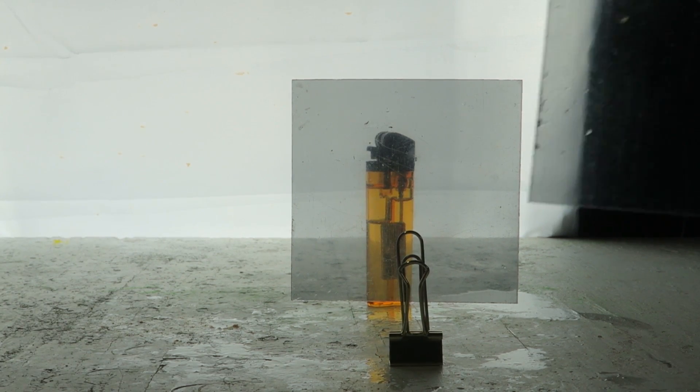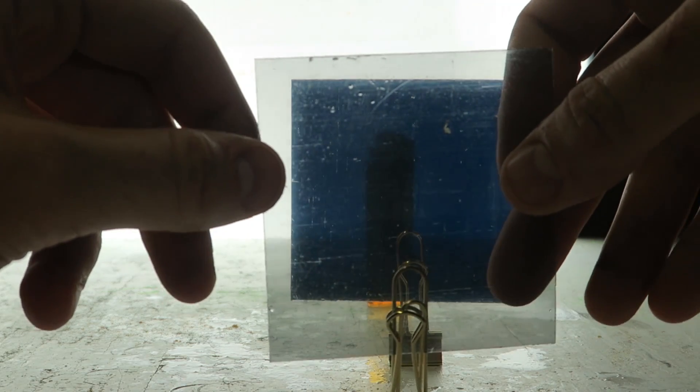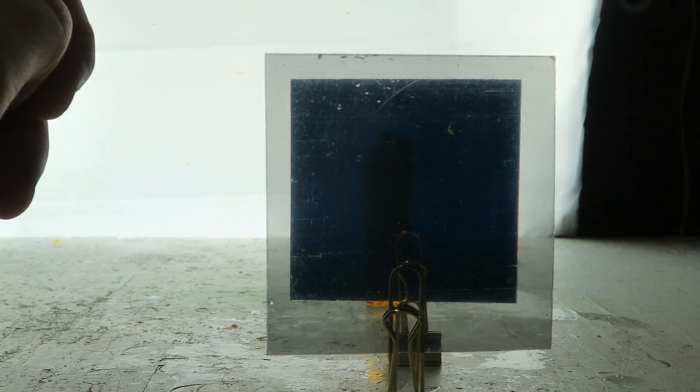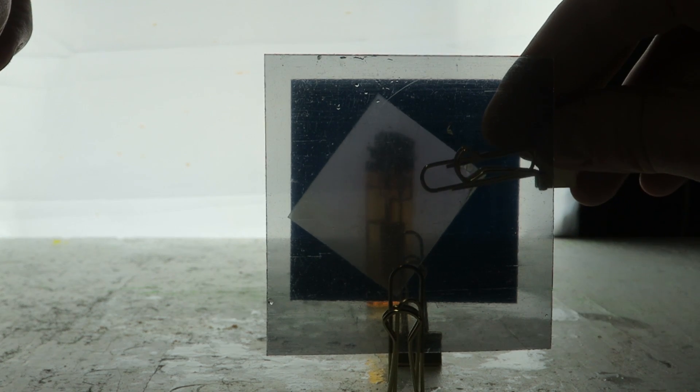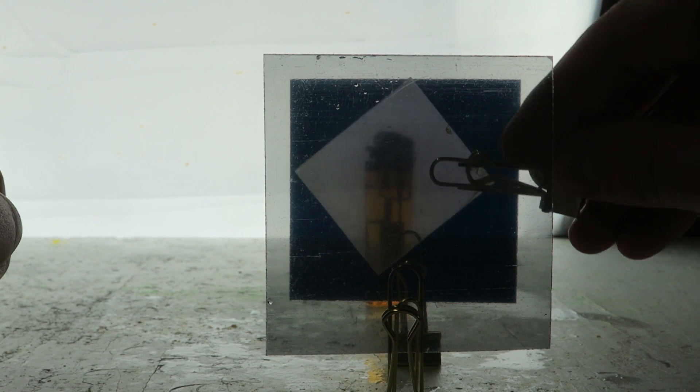Probably better if I show you like this. Turn it like that, boom, you cannot see the lighter as much anymore. Now, I'm gonna bring in another piece of polarized sheet, and if I turn it, boom, you can see the lighter.